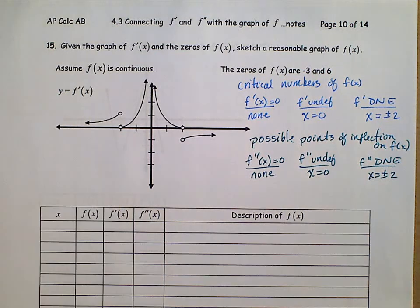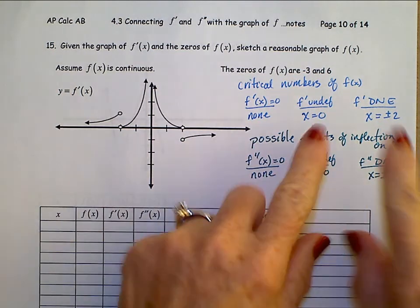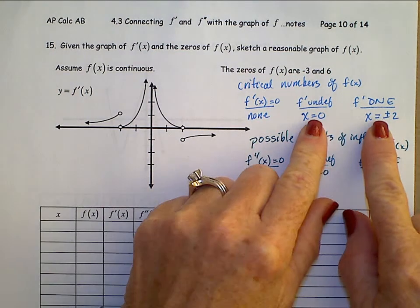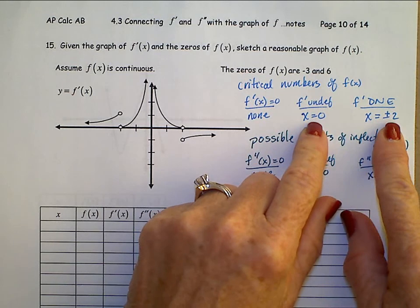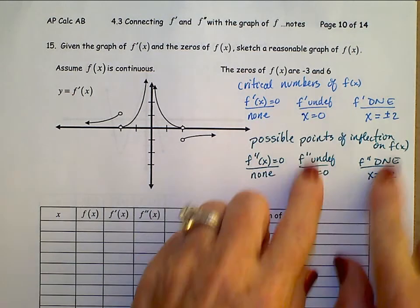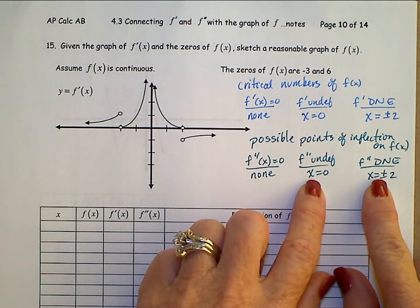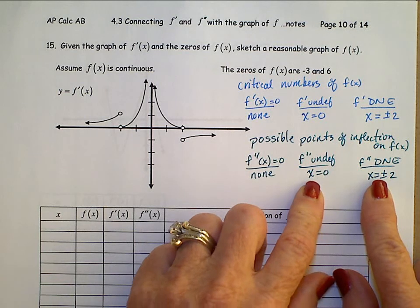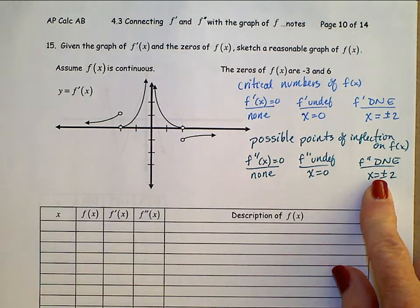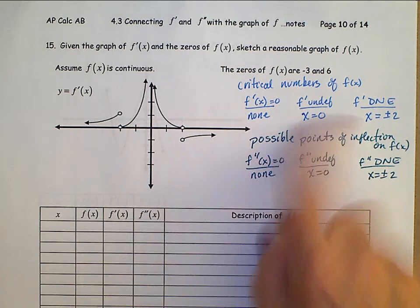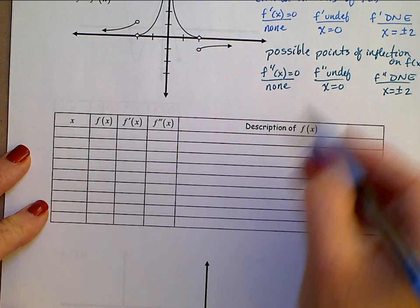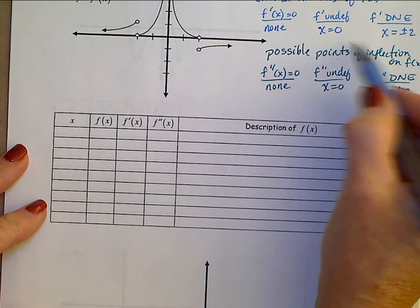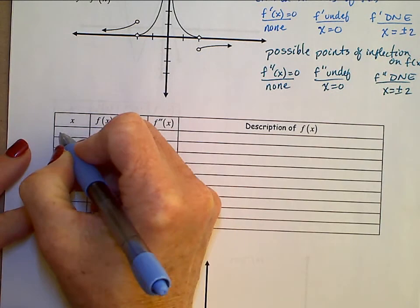In general, once a derivative picks up an undefined or does not exist, then the second derivative at those same spots has those same values. Setting up our interval, we can look at 0 and plus or minus 2, giving us 7 intervals.